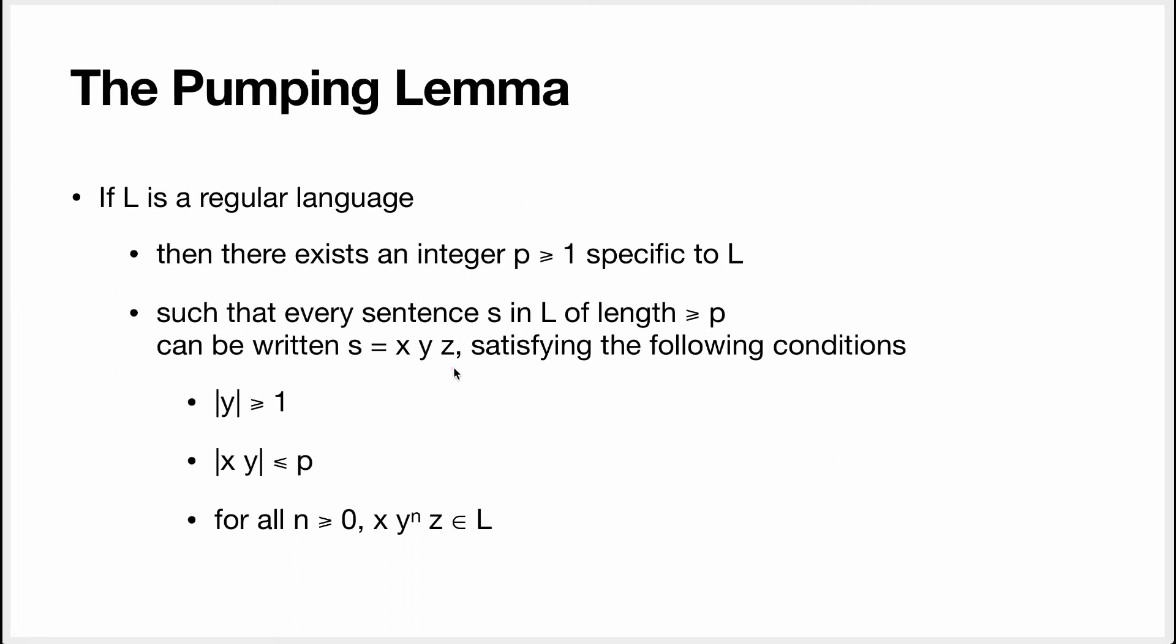Such that every sentence s in L of length greater or equal to p can be written as x, y, z, such that the following conditions are satisfied. x, y, and z are strings of symbols. The length of y should be greater or equal to 1. The length of xy should be smaller or equal to p.